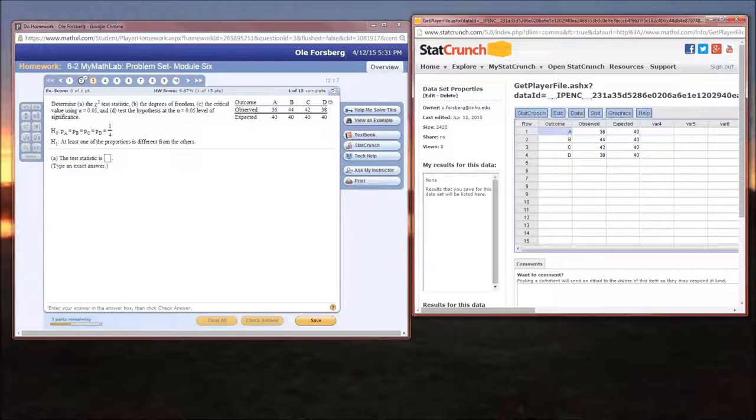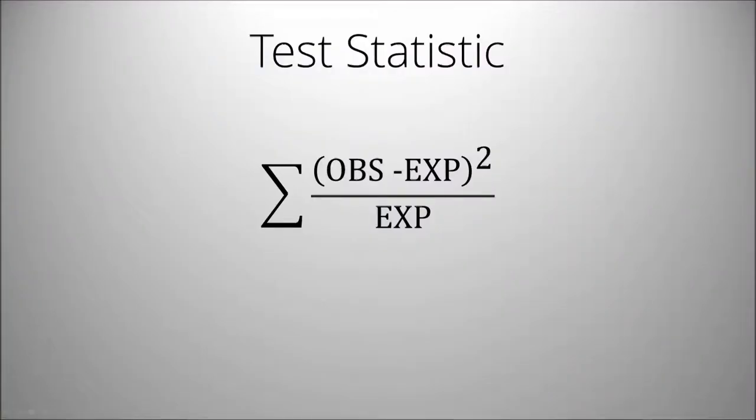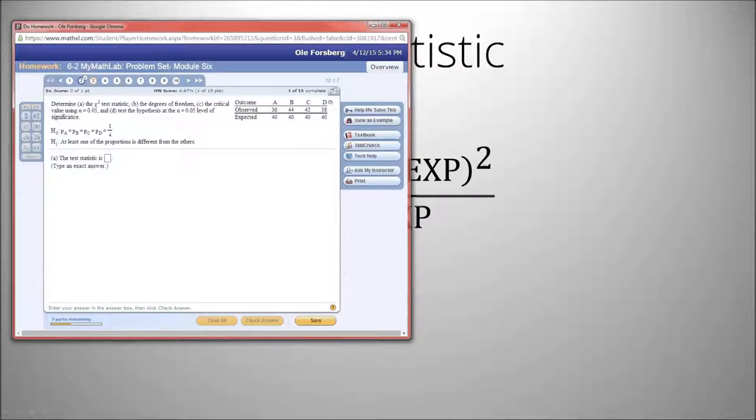So we need to calculate the test statistic. The formula for the test statistic is this. It's the sum of, and this big sigma indicates summing up over all of the cells, what you observe minus what you expect, squared, and then divided by what you expect. So, for instance, in this case, that comes down to observed minus expected, squared over expected.